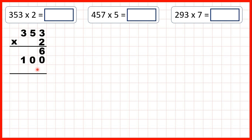Moving on to our third answer line, we need two zeros in our tens and our ones columns. That's because we're multiplying by the three that's in our hundreds, so we need zeros in smaller place values. Three times two is six, so now all we need to do is add up our answer lines, and we have our answer 706.